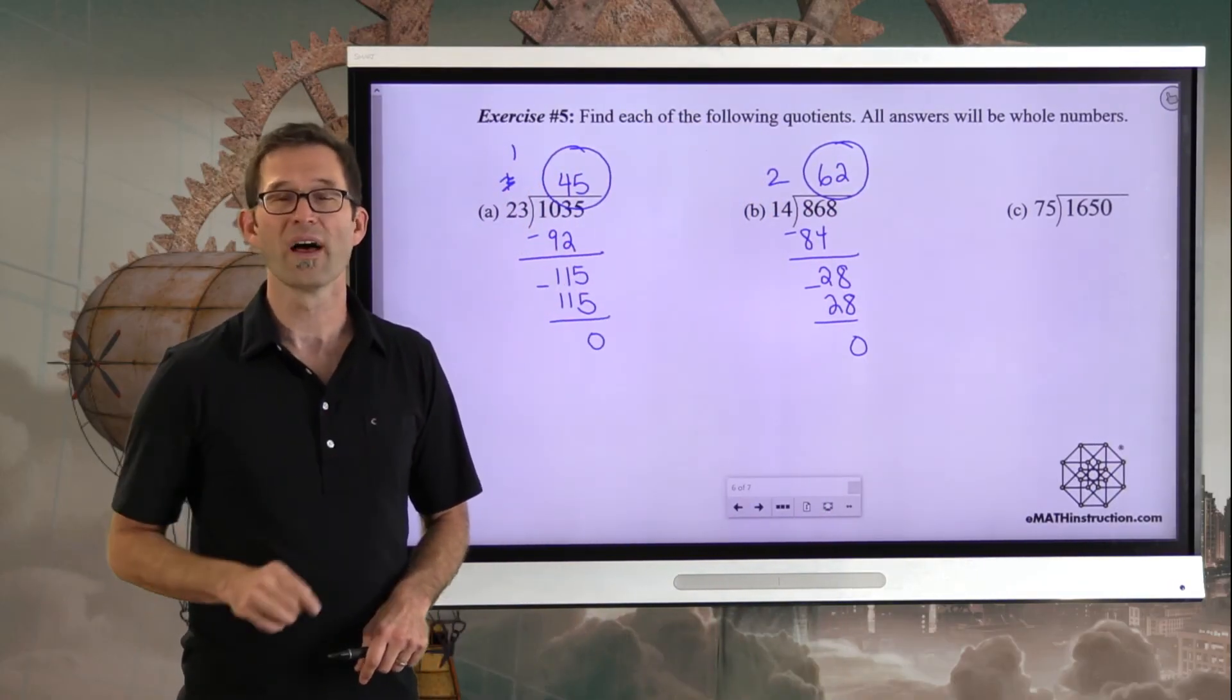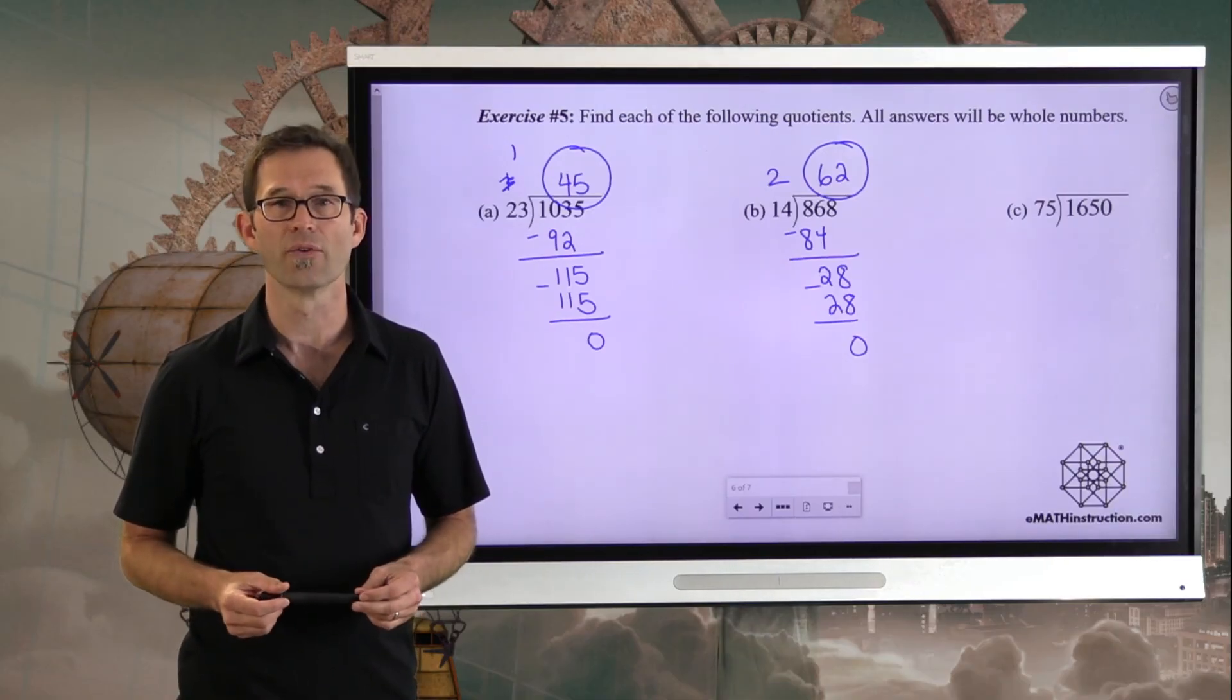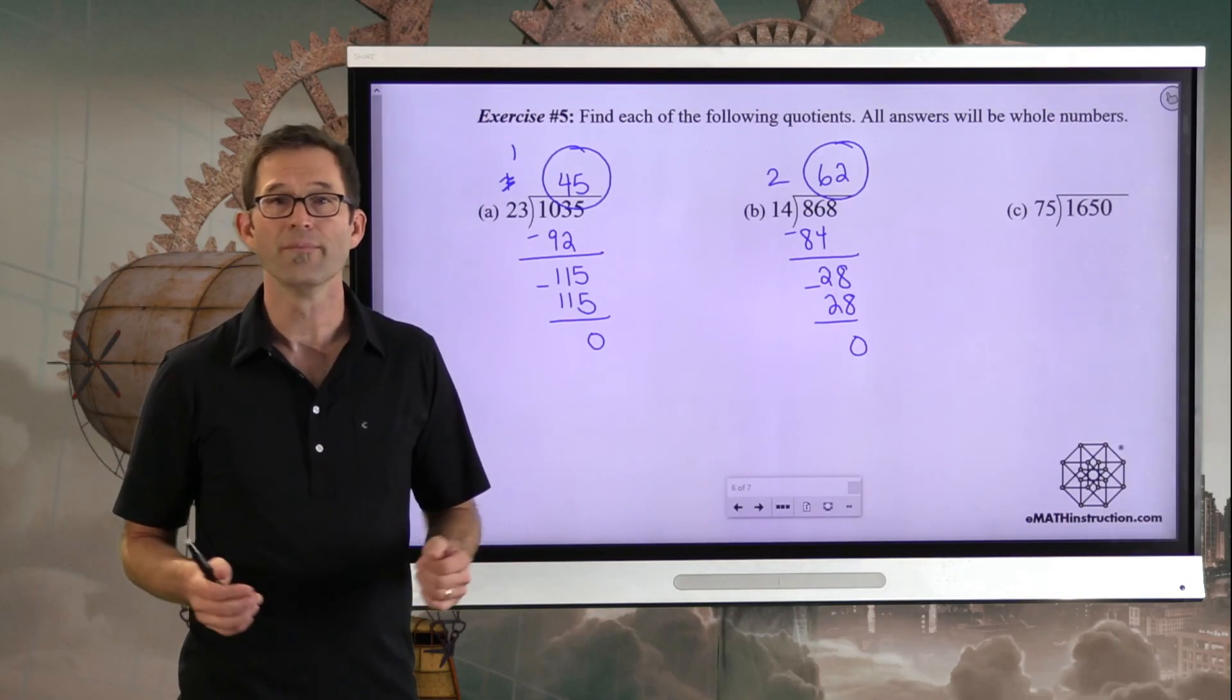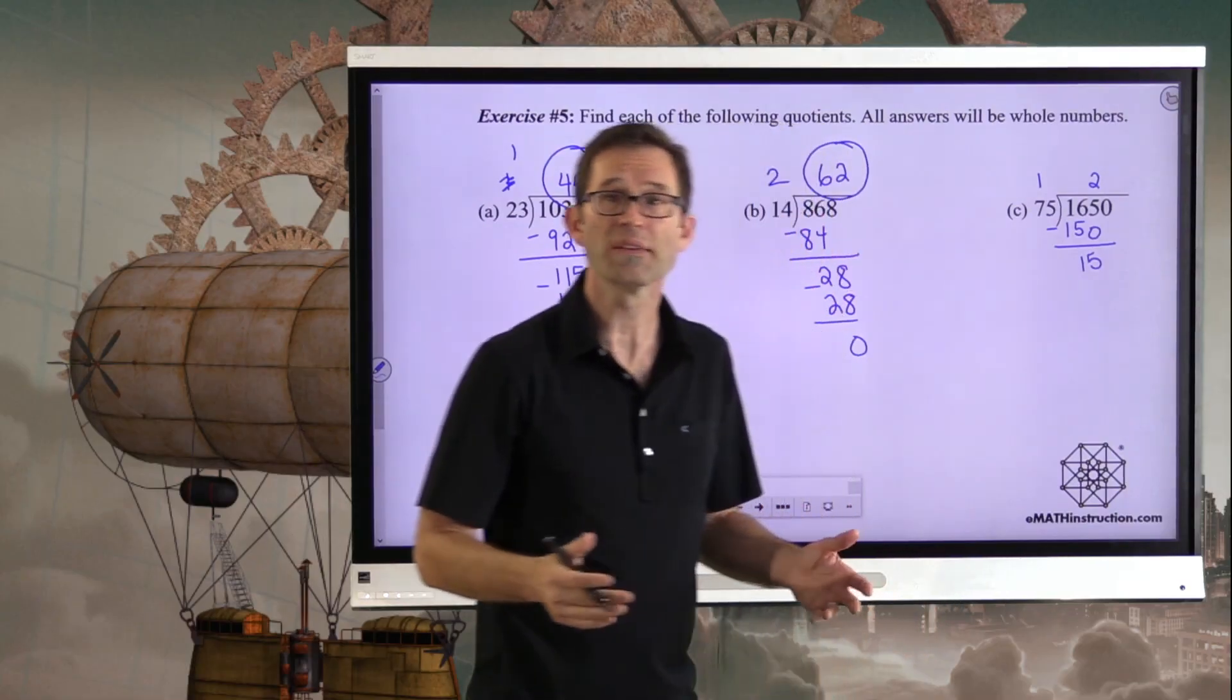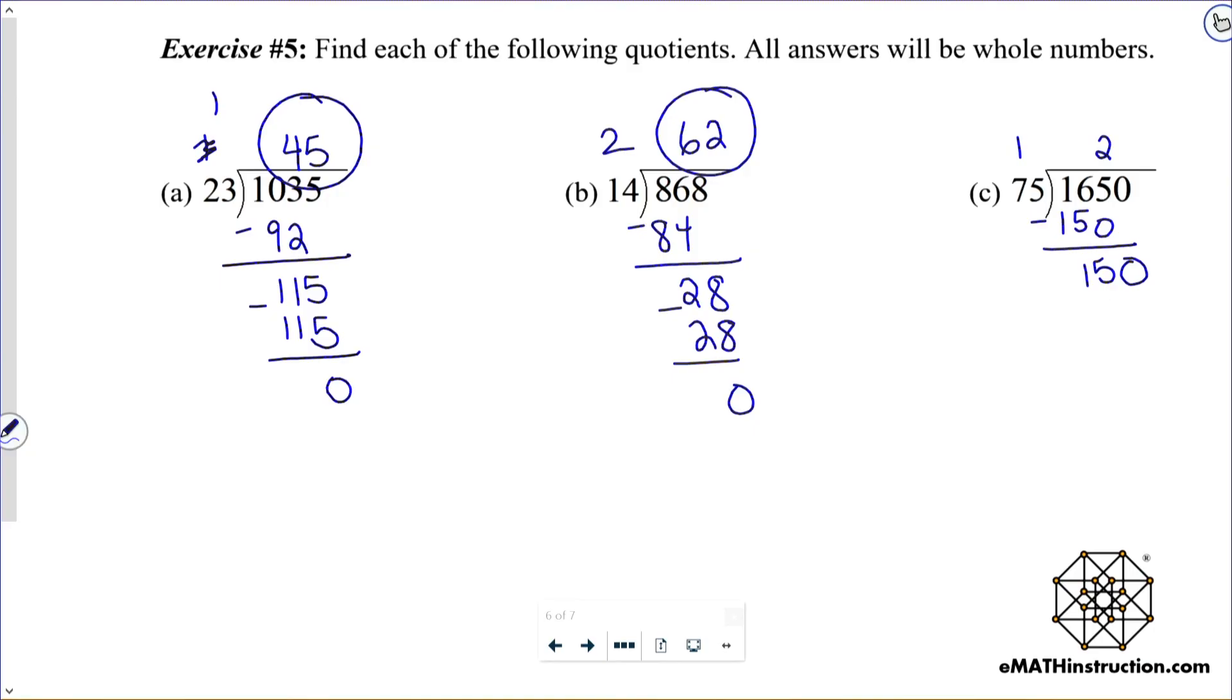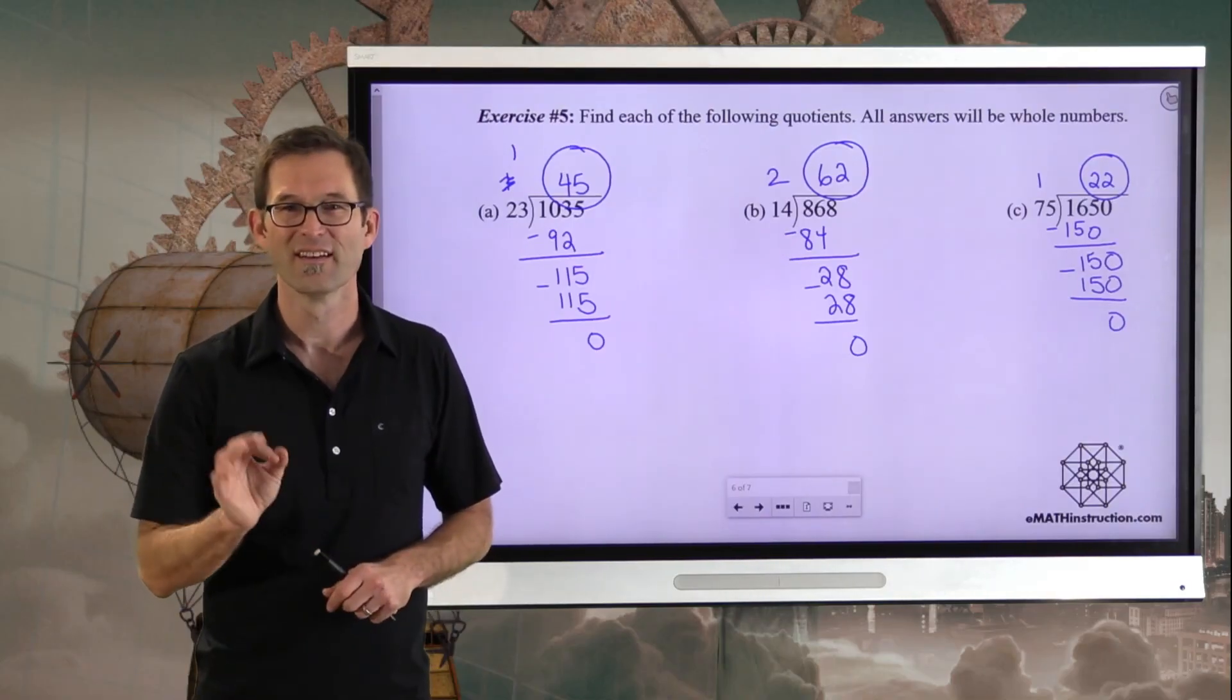What I'd like you to do in our absolute last problem of the day is pause the video and see how many times does 75 divide into 1650. Let's do it. Well, I'm going to start with two. So two times five is 10, carry the one. Two times seven is 14 plus one is 15. When I subtract 150 from 165, I'm left with 15. So that's a good thing, because the 15 is less than the 75. I'm now going to drop the zero down. And I know that two times 75 already is 150. So my quotient is equal to 22. Hopefully you got that one right.